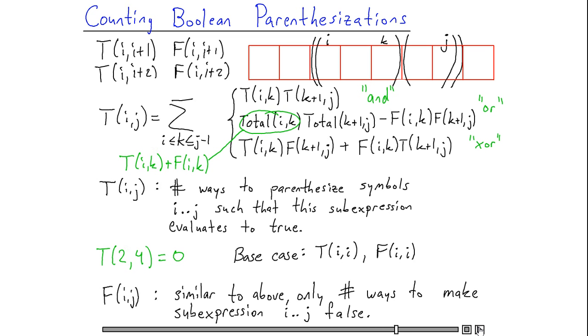And I can finish off with the formula for xor. Remember that an xor expression is true if exactly one of its two operands is true. So the number of ways I can parenthesize this xor expression such that it is true is the number of ways such that the first of the two expressions is true and the second is false plus the number of ways where the first expression is false and the second is true.